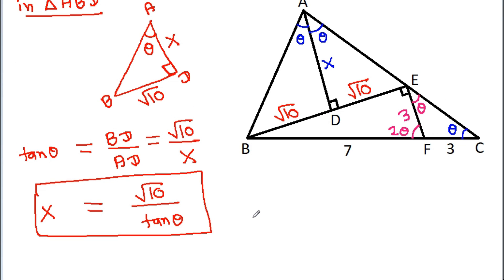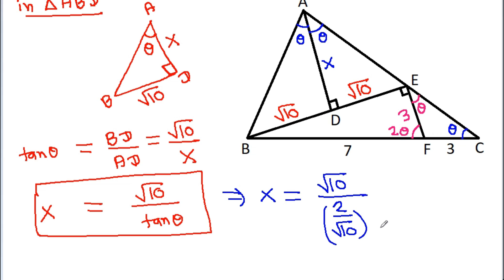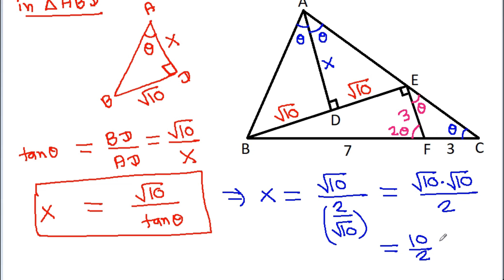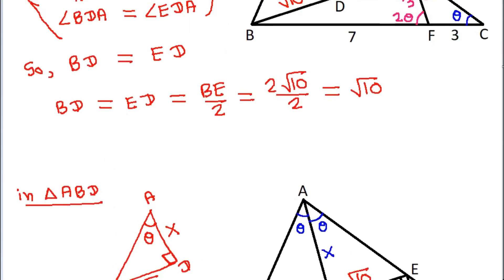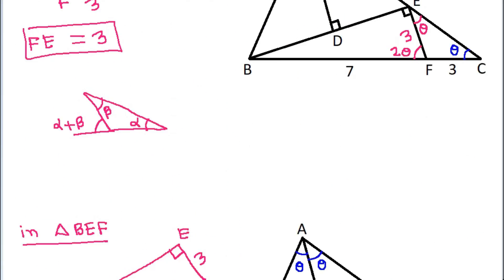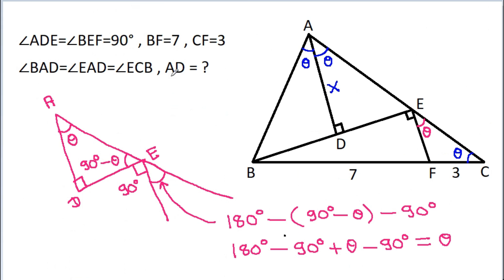So tan theta equals square root of 4 by 10, which equals 2 divided by square root of 10. Now we have X equals square root of 10 divided by tan theta, which is square root of 10 times square root of 10 divided by 2, and that is 10 by 2, which equals 5. So AD is 5.